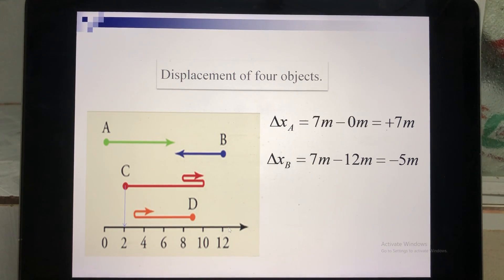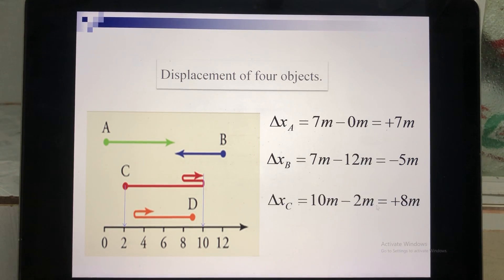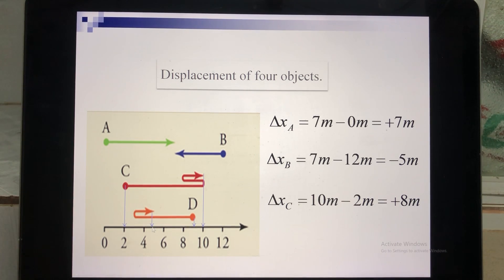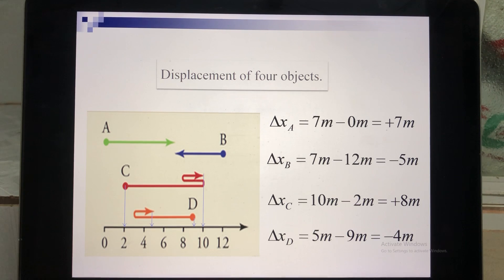For object C: don't worry about the curved path — the initial position is 2 and the final is 10, so 10 minus 2 gives plus 8 meters. For object D: the initial position is 9 and the final position is 5, so 5 minus 9 gives minus 4 meters. As you can see, displacement can be negative or positive because it depends on the initial and final positions.